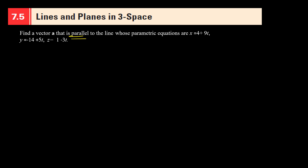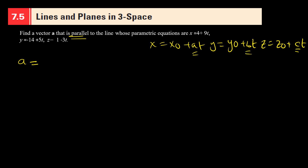To find the parallel vector, what we have to do is get the components of vector a. In the previous video I told you that the parametric equations are: x = x₀ + at, y = y₀ + bt, and z = z₀ + ct, where a, b, c are the components of vector a. So here a is 9, b is 5, and c is negative 3. We now have the components: 9, 5, and −3.